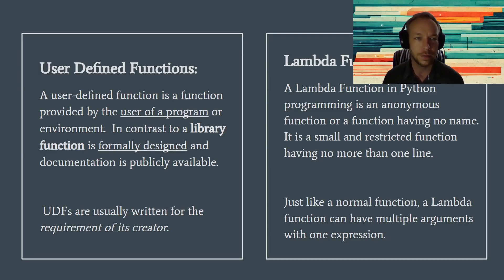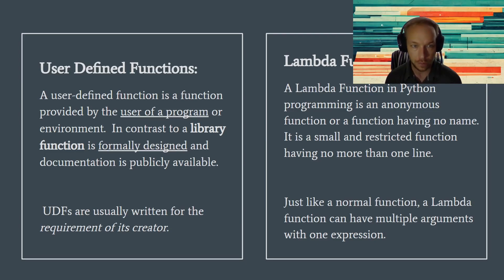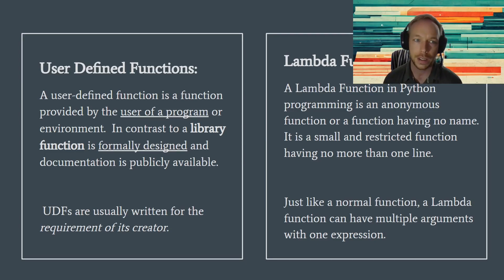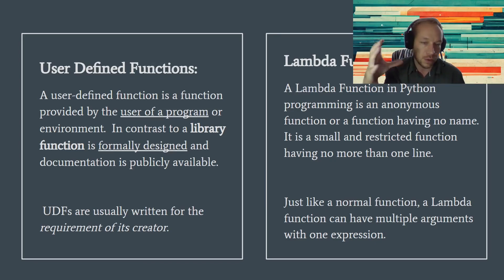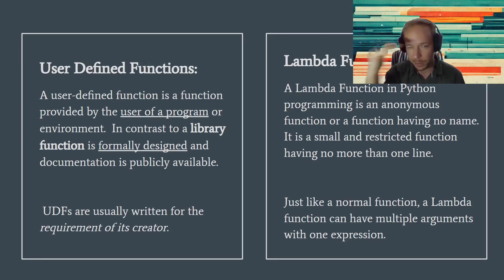So in Python, we have two functions that we'll have access to. There's the user-defined function, which might be what you've heard of before. This is a function where we're going to be able to give it a name, and it's used when we have some sort of complexity because we usually have many lines — code that is not able to fit just in one line.